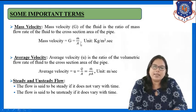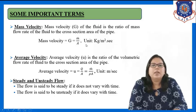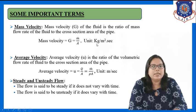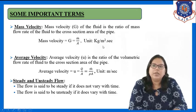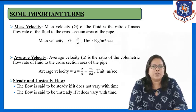So, mass velocity G is equal to ṁ upon A, that is mass flow rate upon cross section area. The unit of mass velocity will be kg per meter square second, because mass flow rate is in kg per second and area is in meter square. This is about mass velocity.